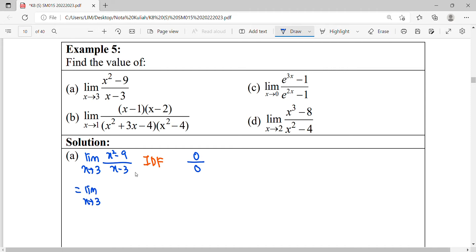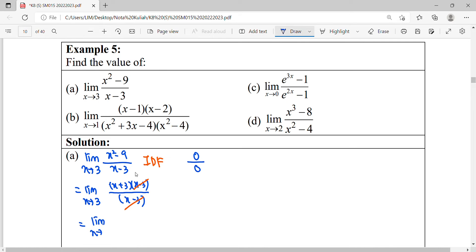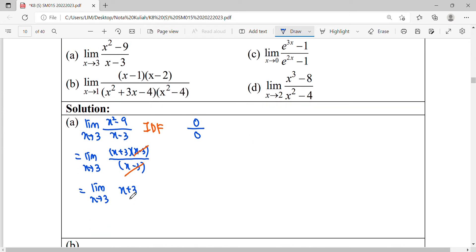So for quadratic, we can factorize. X plus 3, X minus 3. Then you can notice that your function which is IDF form, it can be simplified. After simplify that function, now you're trying your limit for this function when X approaches to 3. So what is the answer? It will be equal to 6.